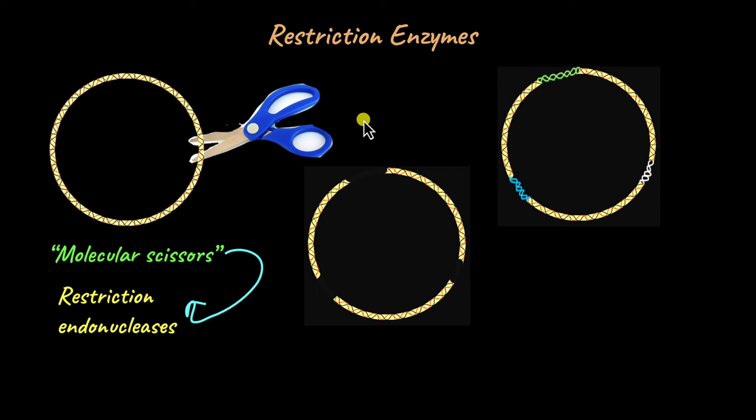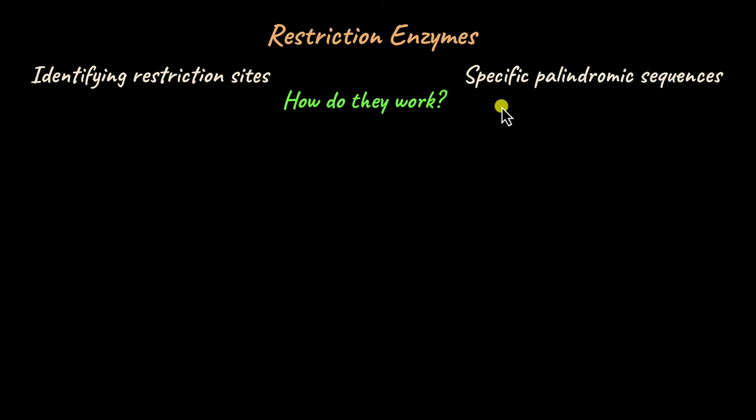Now what are these restriction enzymes and how do they work? First off, restriction enzymes are enzymes, so they have specific active sites, and these active sites recognize something known as restriction sites on the target DNA. How do these restriction enzymes know where to bind and where to cut? They identify restriction sites, which are specific palindromic sequences in that target DNA.